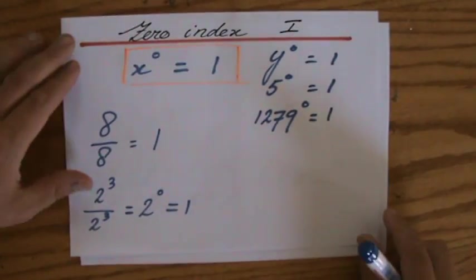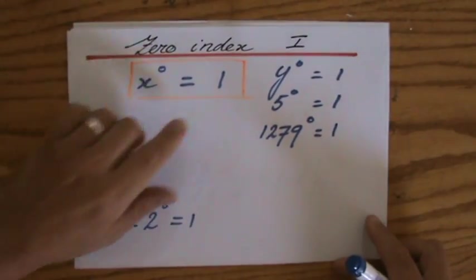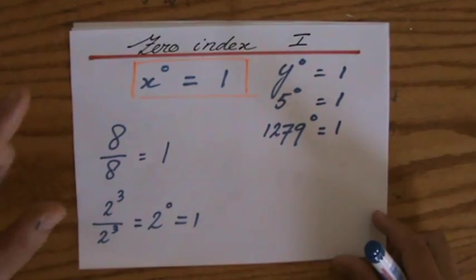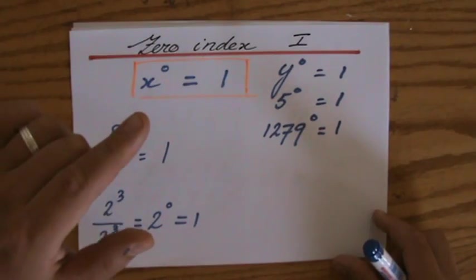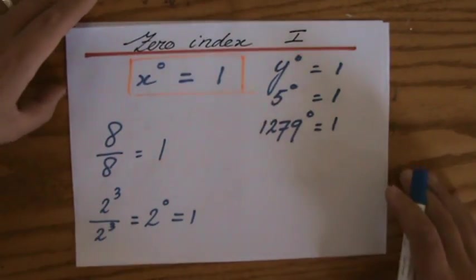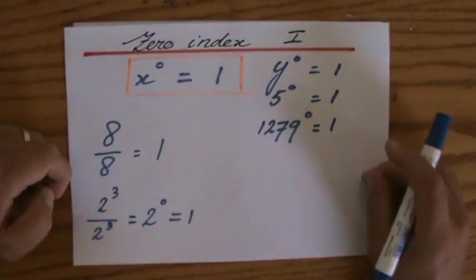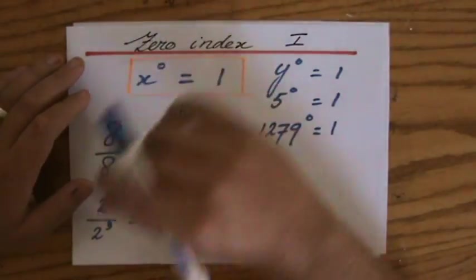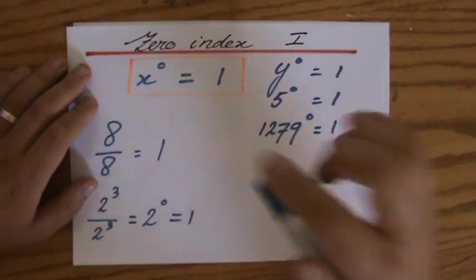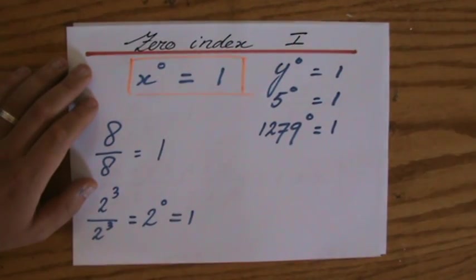Everything to the power 0 equals 1. I'm going to dedicate one more video to this with some example questions, and I'm sure you'll do fine. Anything to the power 0 equals 1 — I'll see you there.